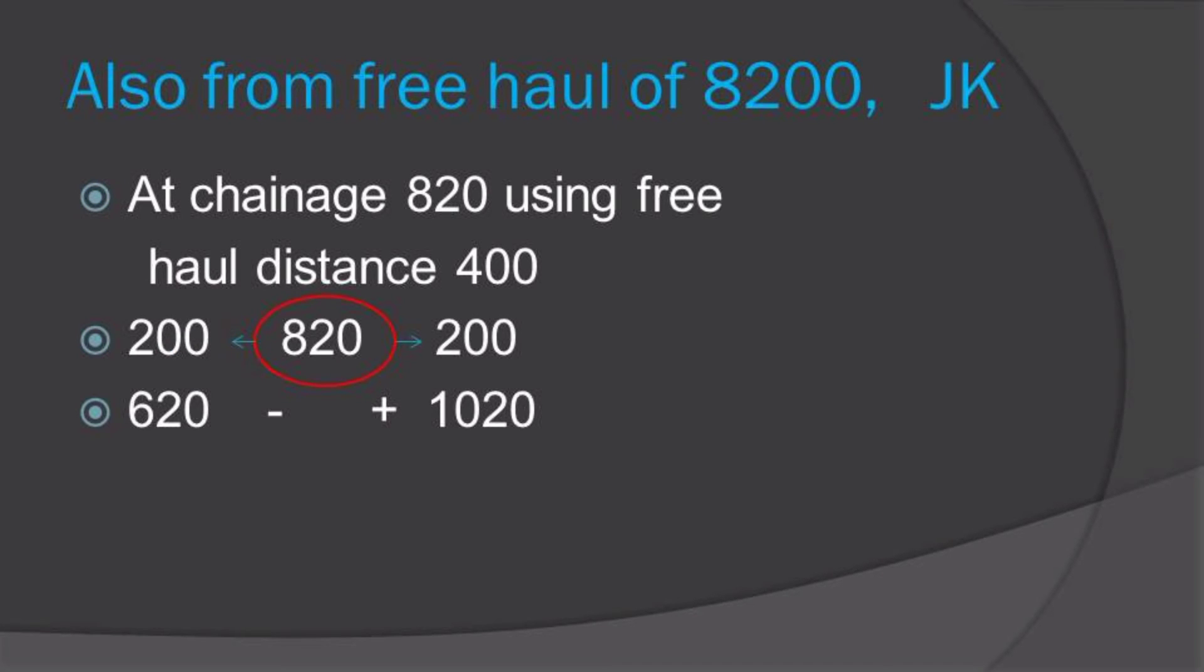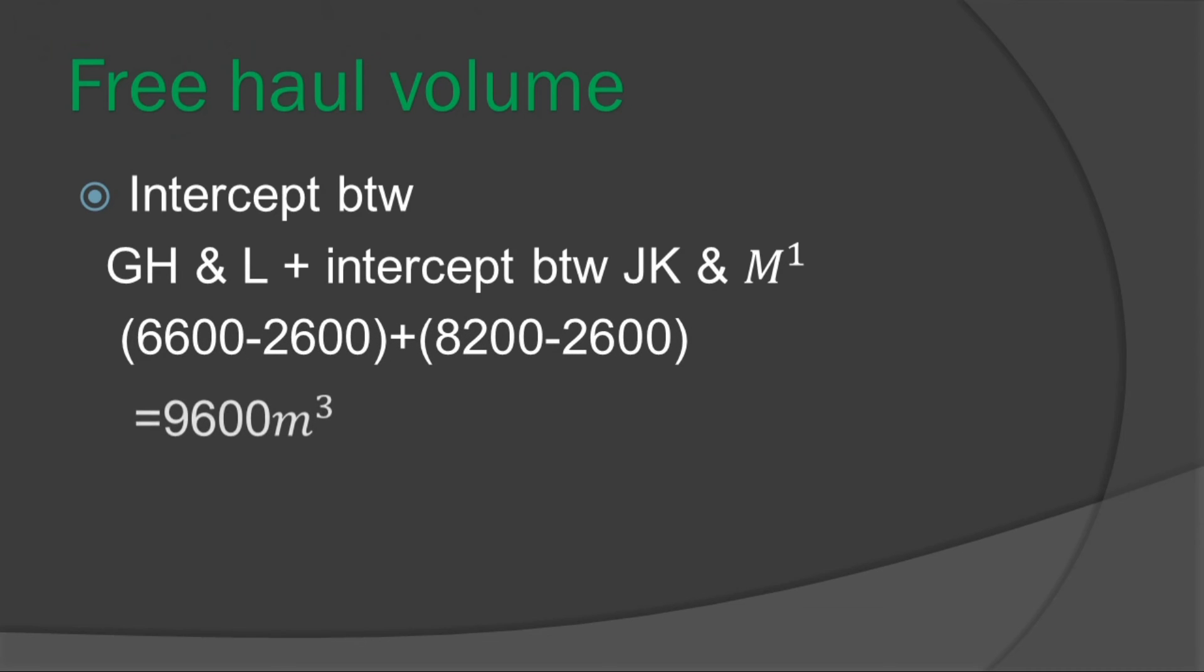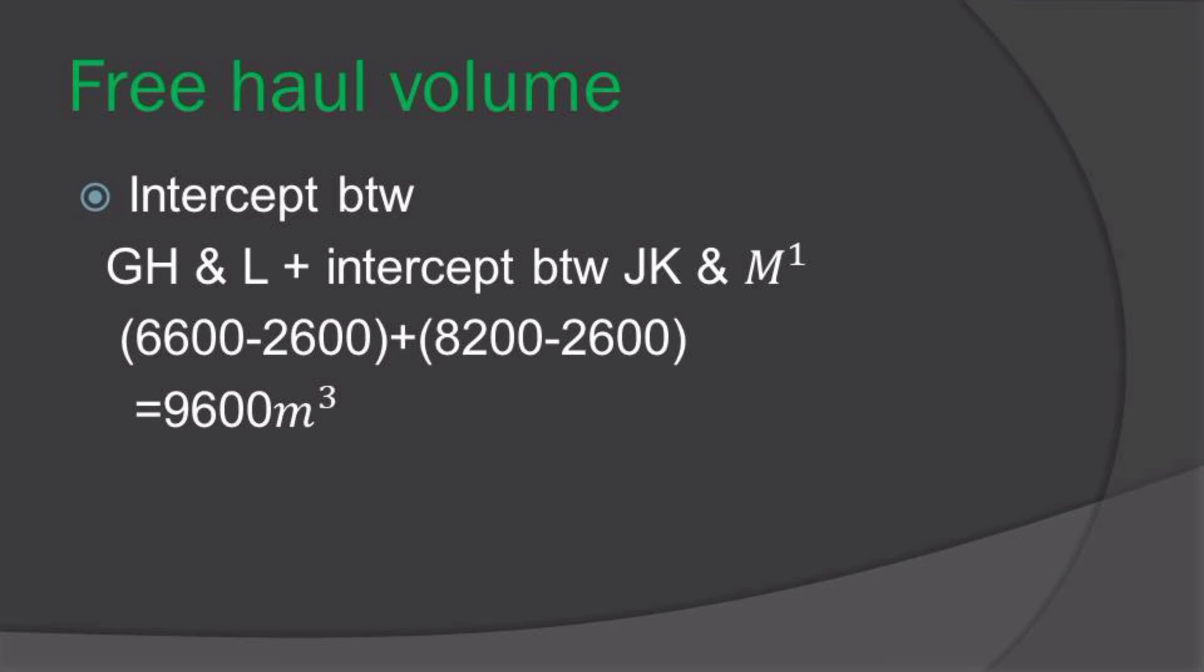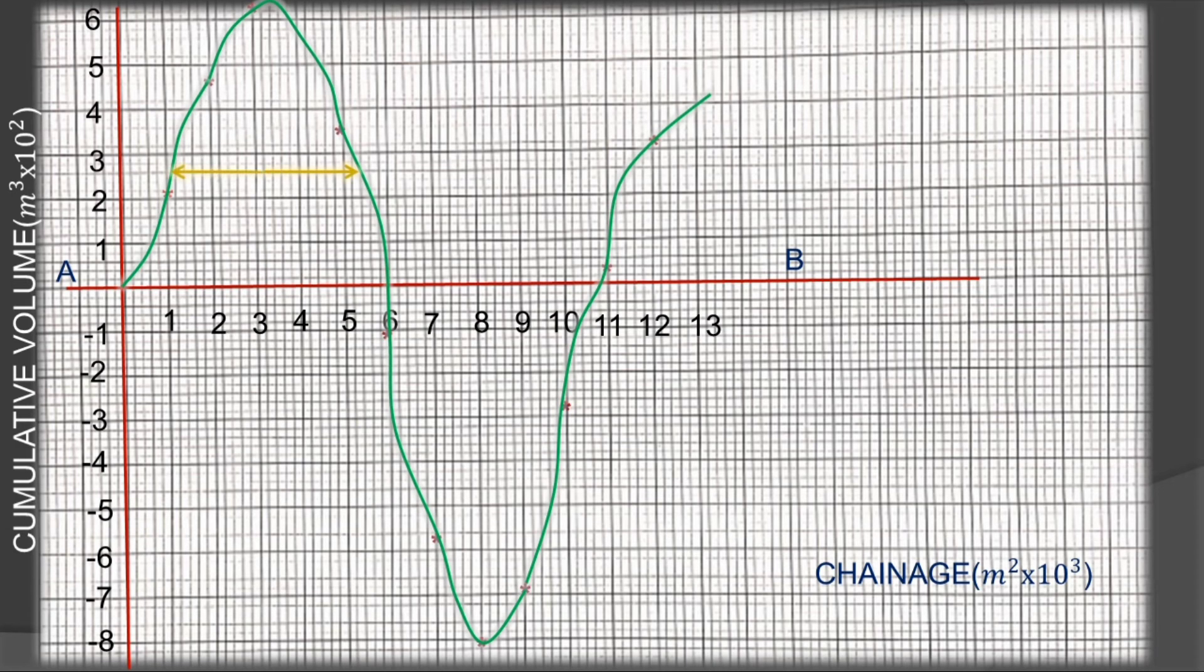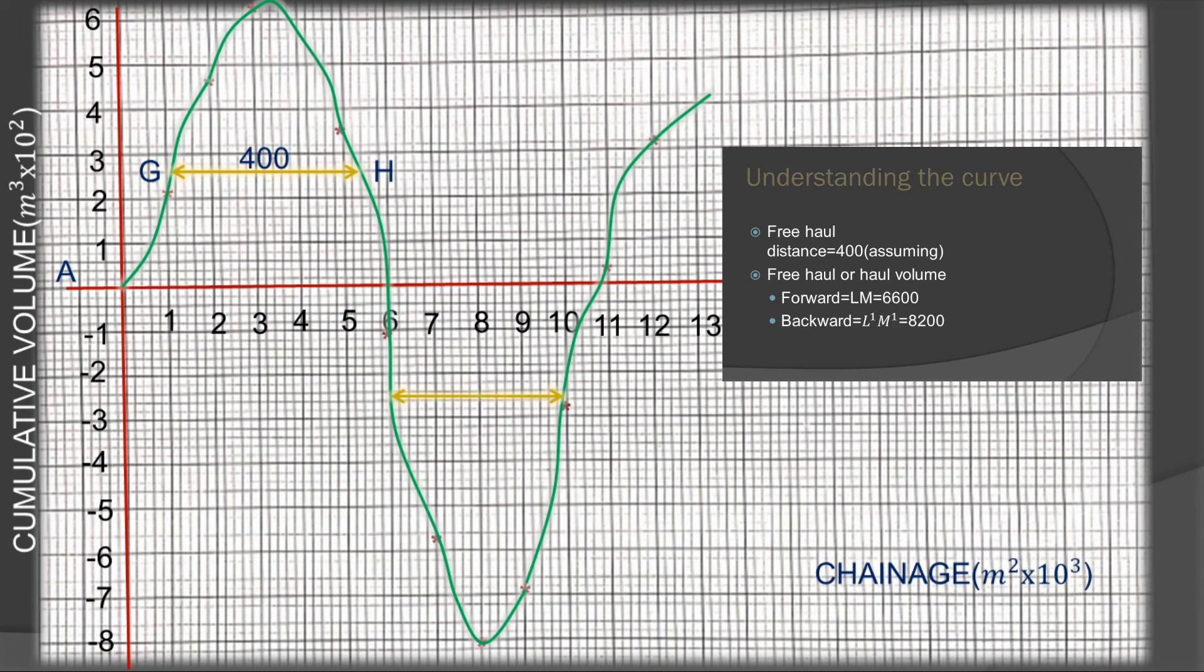We move on to finding the free haul volume calculated from the intercept between G and H and point L. Then we'll add the same for the other curve intersection of JK and M1. So that will give us our free haul volume. This is the volume from the free haul to the free haul distance, as you can see on the curve it's illustrated well there. So if you draw the curve well using the graph, all your information will be provided in a smooth and right manner.